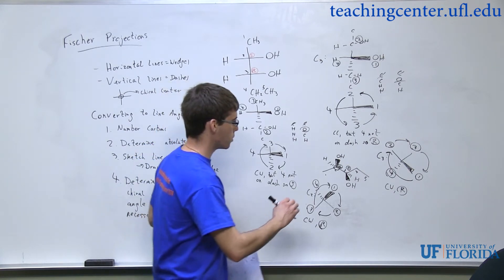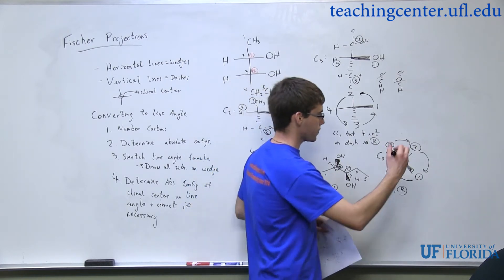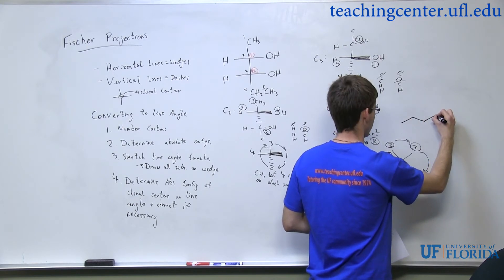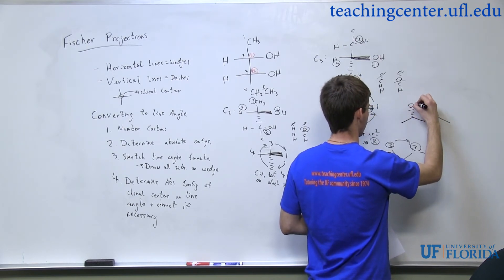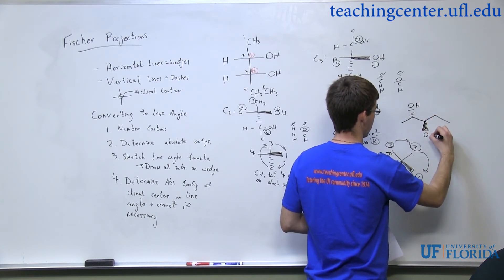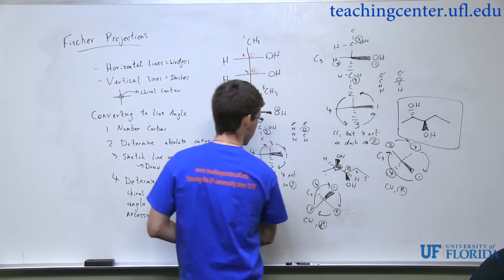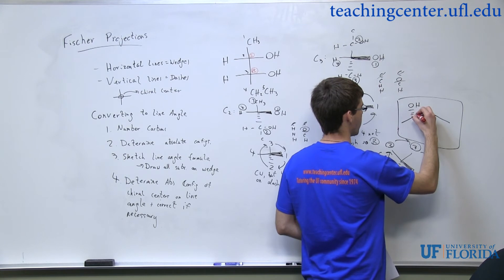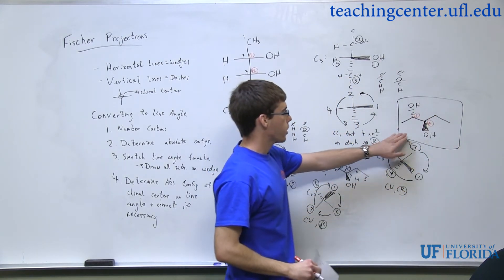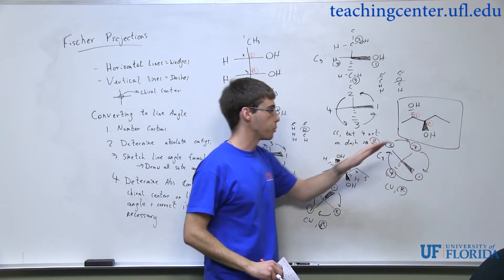All we have to do now is just draw this molecule again, but flip the chiral center. And that will leave us with our corrected line-angle formula. You can double check the absolute configuration if you're not sure, or if you want to be 100% certain. But there you go — this Fischer projection is equivalent to this line-angle formula.